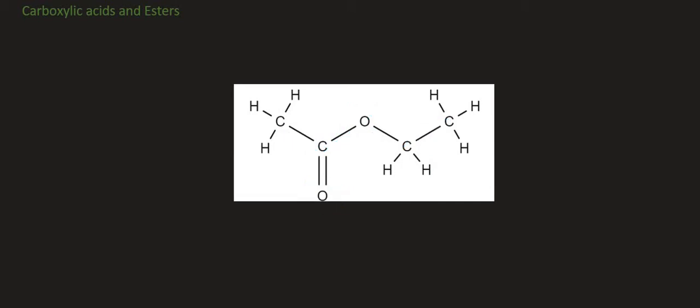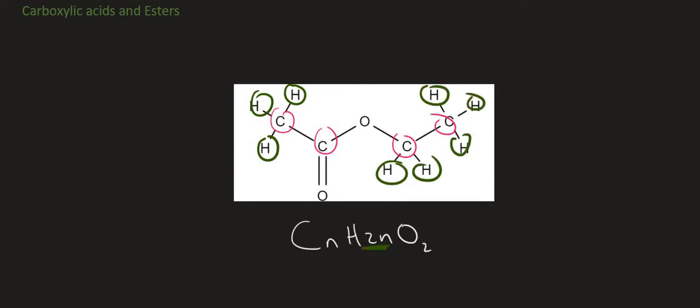Their general formula is the same as the carboxylic acids and so that's going to be CnH2nO2. Let's explain that again. So carbon there's 1, 2, 3, 4. Hydrogen 1, 2, 3, 4, 5, 6, 7, 8. So we can see that it's double and then the oxygen will always just be 2.